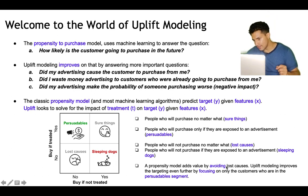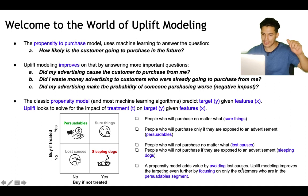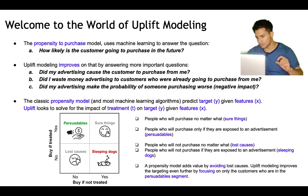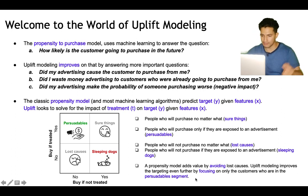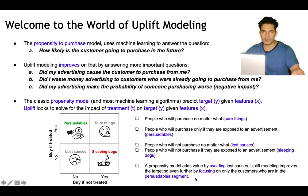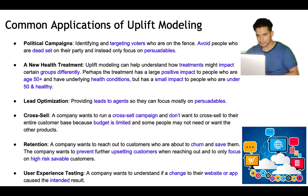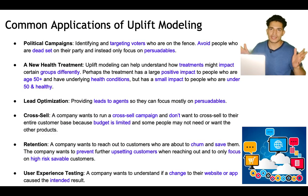The propensity model adds value by avoiding lost causes — it can detect those who will not buy anyway. But uplift modeling improves targeting even further by focusing only on customers in the persuadable segment — those who can purchase if we advertise to them.